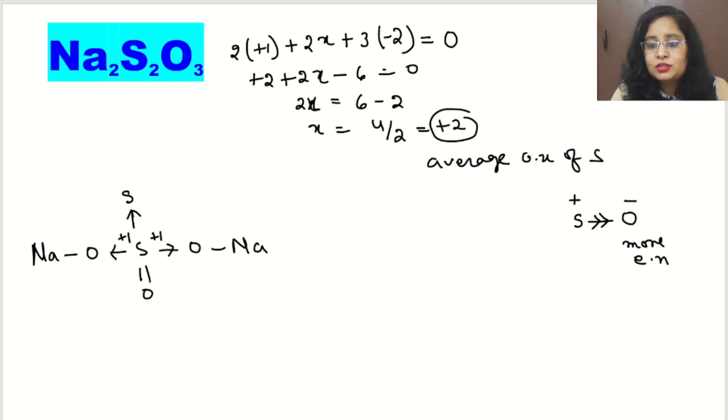So here we will get +1 from here, +1 from this oxygen, and here two times, meaning +2 from here. So total we can say this sulfur is having +2 + 1 + 1, which means +4 so far.